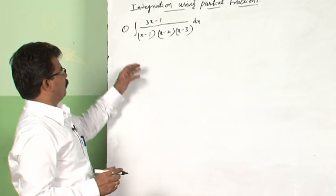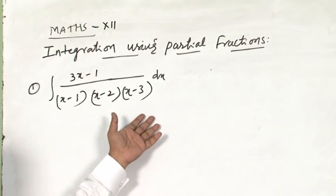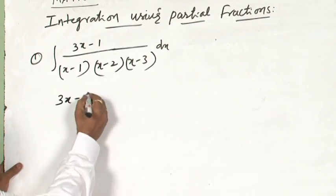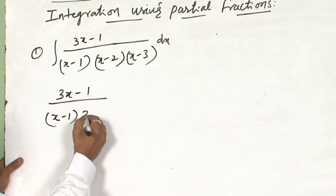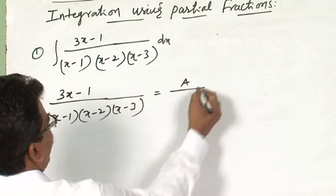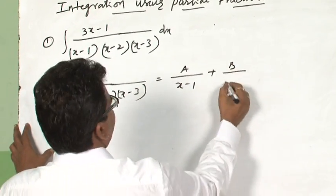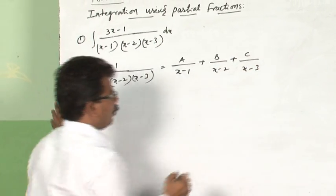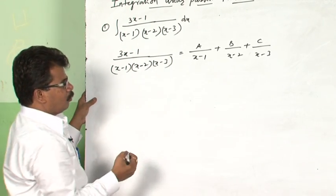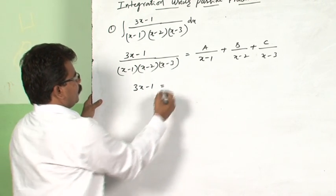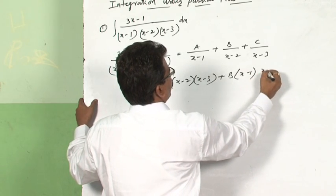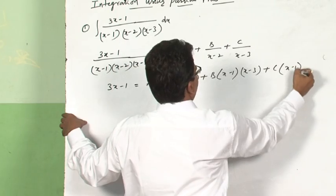Let us solve: integral of (3x − 1) divided by (x − 1)(x − 2)(x − 3). There are three linear factors in the denominator. This rational function can be resolved into partial fractions as A/(x − 1) plus B/(x − 2) plus C/(x − 3). We need to find the unknown values A, B, and C, then substitute back and integrate.